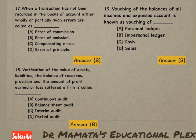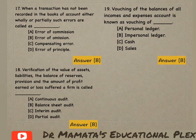Income and expenses account ke balances ka vouching karta hai toh usse vouching of impersonal ledger kaha jaata hai. Option B is the correct answer.